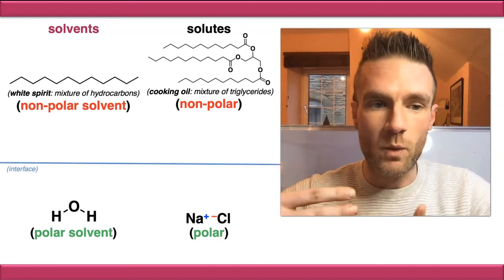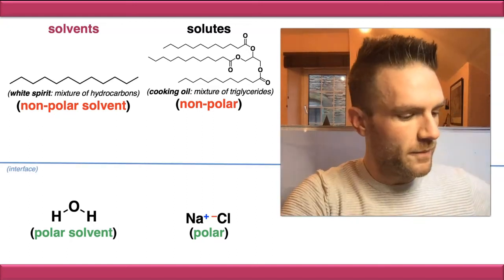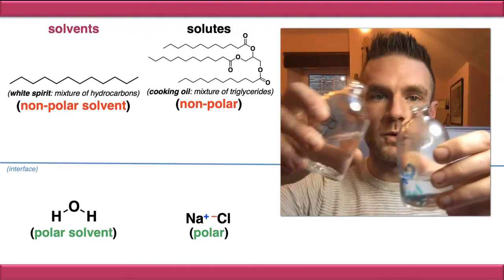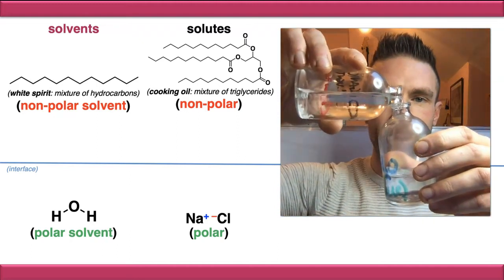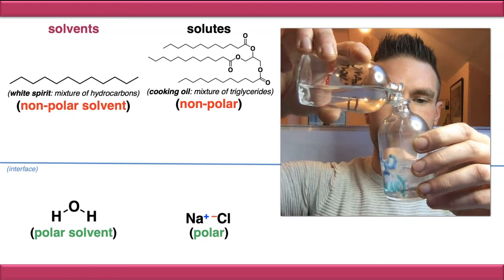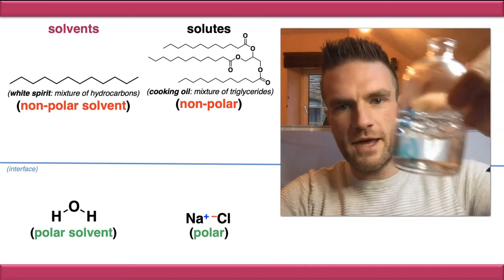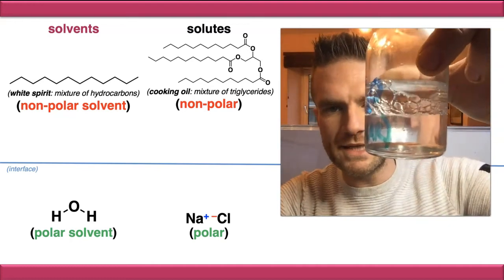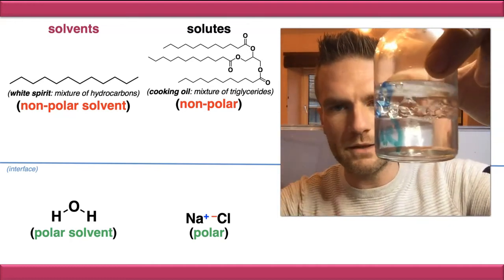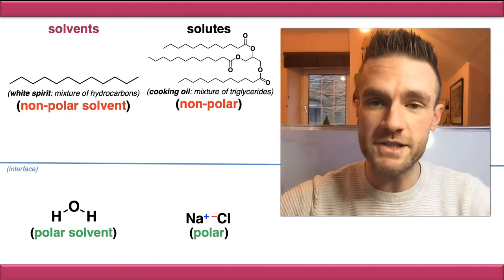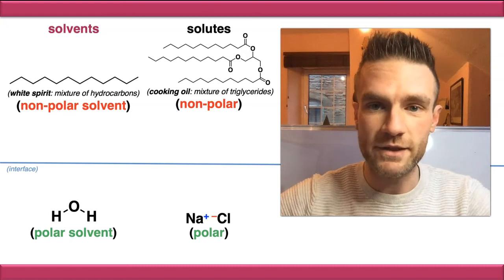So if we take our white spirit and our water, and we actually pour them into the same container, I'm just going to take the white spirit and the water and pour them together here. Then you should see that they formed two distinct layers with an interface in the middle here. And it's this property of these solvents being immiscible and having different polarities which is going to allow us to do some interesting things.